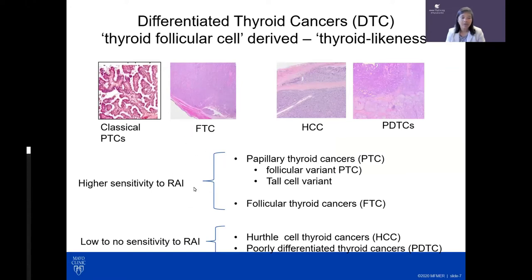Papillary and follicular thyroid cancers are more likely to have higher sensitivity to radioactive iodine, at least initially. Hürthle cell and poorly differentiated cancers often have limited, low sensitivity. Tall cell variant also falls in this lower-sensitivity category, as only a minority tend to be highly sensitive to radioiodine.